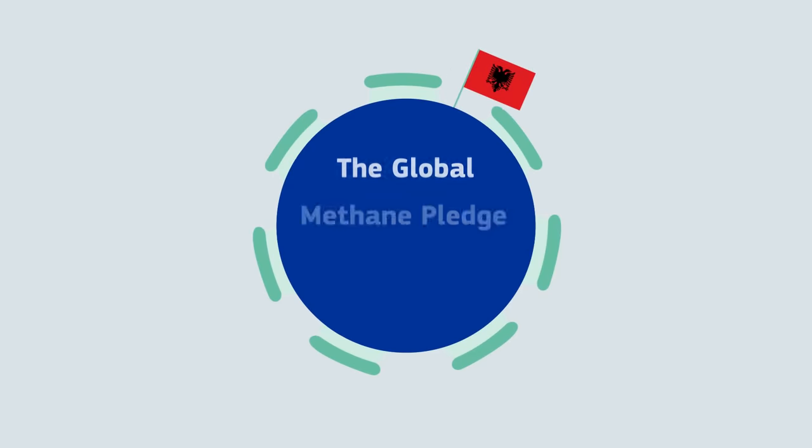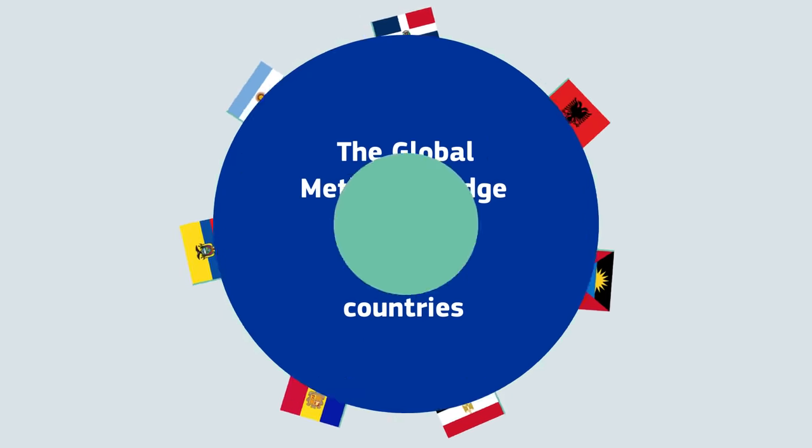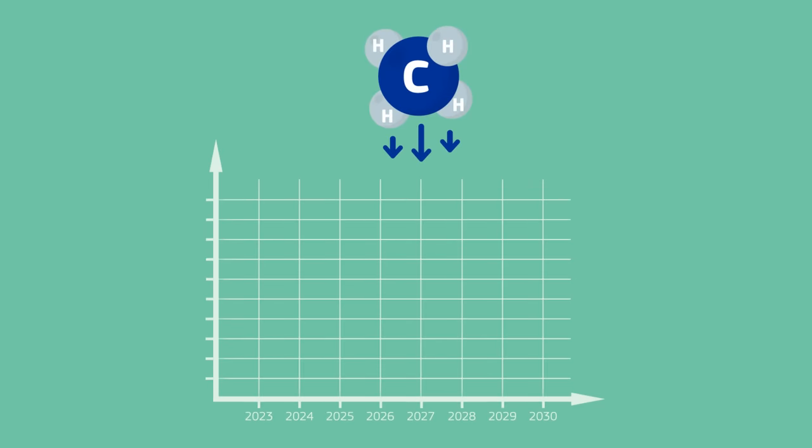The Global Methane Pledge is a voluntary initiative that was launched during COP26. The pledge aims to cut global methane emissions by 30% by 2030.